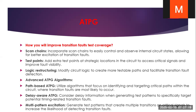The next question is: how will you improve transition fault test coverage? First is scan chains — incorporate scan chains to easily control and observe internal circuit states, allowing better excitation of transition faults. Next is test points — add extra test points at strategic locations in the circuit to access critical signals and improve fault visibility. Next is logic restructuring — modify circuit logic to create more testable paths and facilitate transition fault detection.